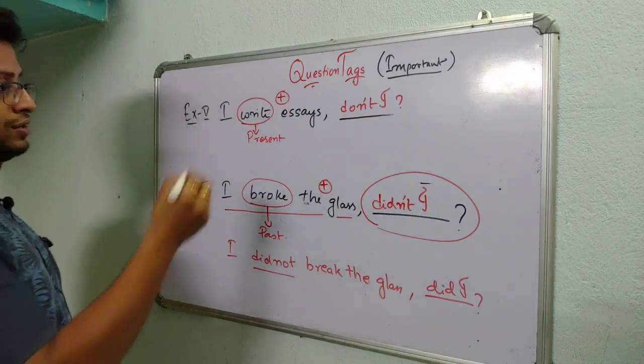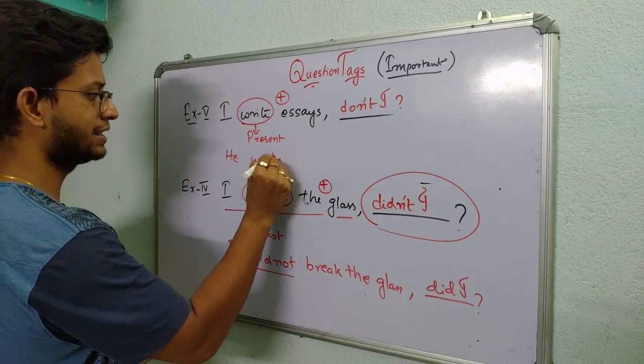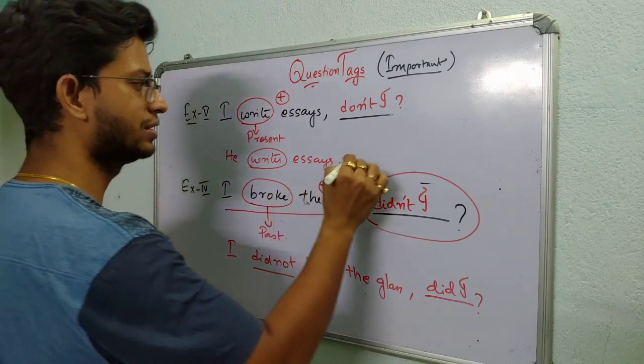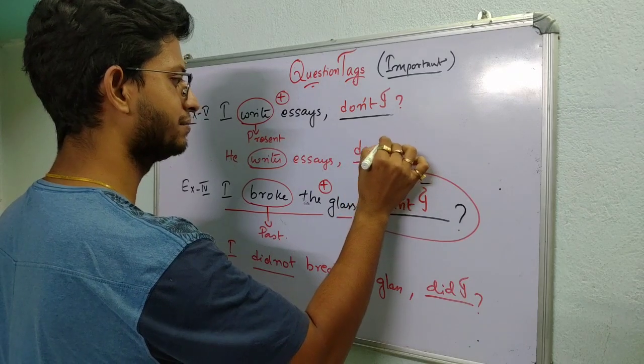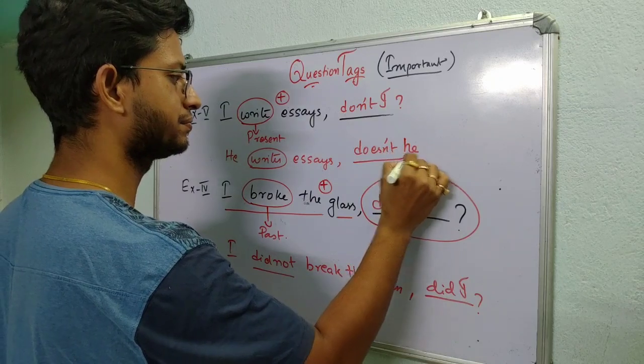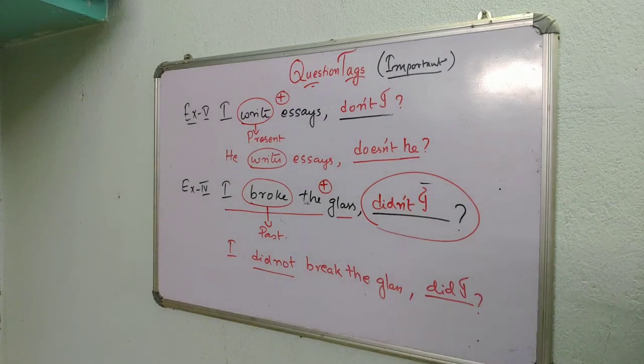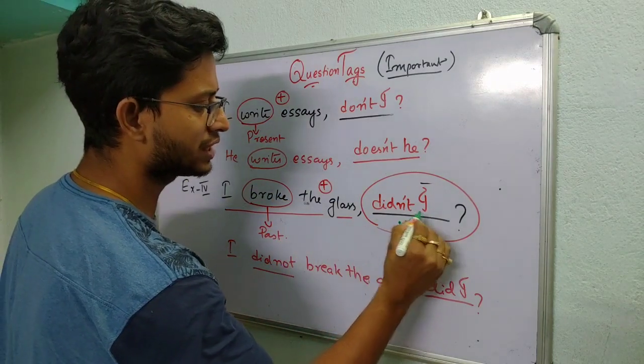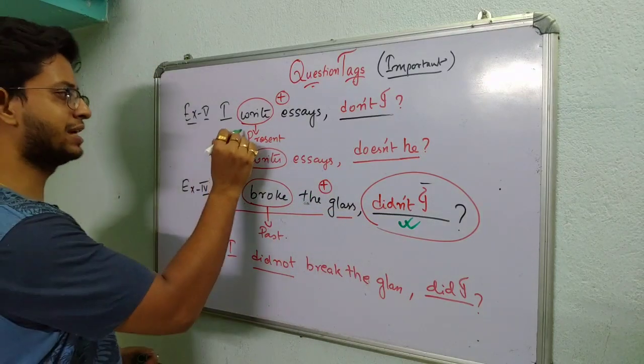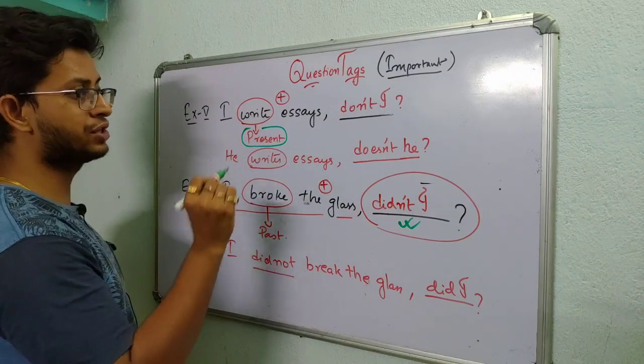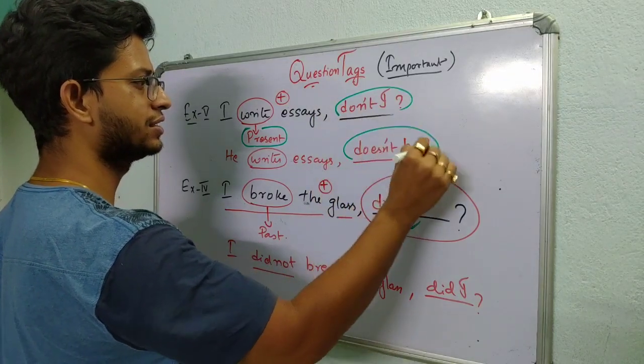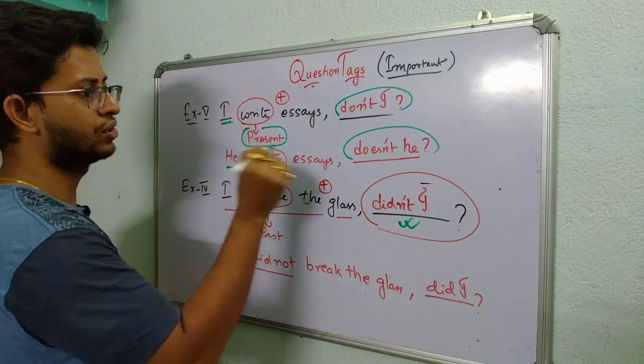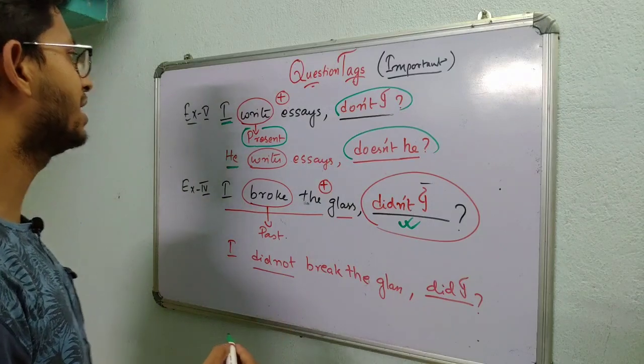So as for past tense I told you, broke was there, so we did didn't. Here what will happen? Don't I. I write essays, don't I. Suppose here instead of this I, it becomes he. He writes essays. Then what do we do? Look, this is also present. Only here I changed to he. Then we have to change it into doesn't he. So look, let me clarify once more, maybe you got confused here. So first see, if you have past and that too in positive, there is only one option, that is using didn't. But if you have present, in case of present you have two options: don't and doesn't.